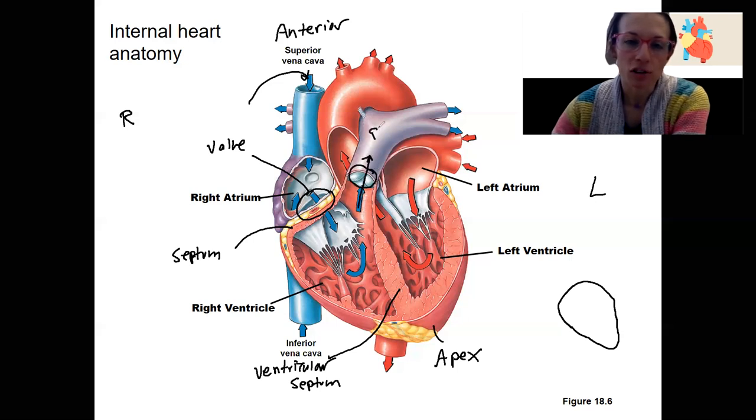Into the pulmonary trunk, where it's going to go pick up oxygen. It's going to the two lungs here. It's where the divider is. Another valve that we have to go through.